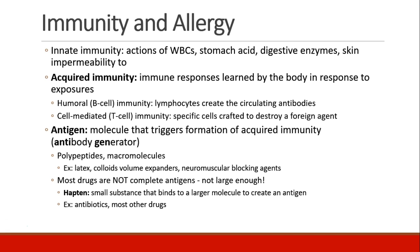A little vocabulary. An antigen is a molecule which triggers formation of acquired immunity. Antigen is a combination of two words: antibody generator. Examples of antigens are polypeptides or macromolecules, latex, colloid volume expanders, and neuromuscular blocking agents. All of these can be antigens.